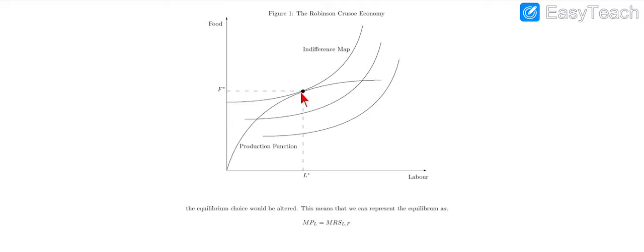This is the point of equilibrium. We can say that the optimal choice of Robinson should be where his production function just meets the indifference curve. This is the equilibrium point where the production frontier is equal to the indifference curve, where both curves intersect. At this intersection, Robinson raises utility by increasing or decreasing labor supply as needed.